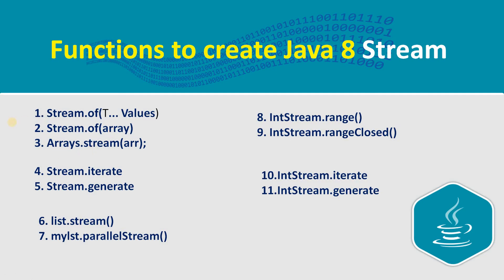There is one more function called arrays.stream to convert your array into a stream. The next ones are stream.generate and stream.iterate — these two functions come into picture when you don't have your own set of values but still want to create a stream.